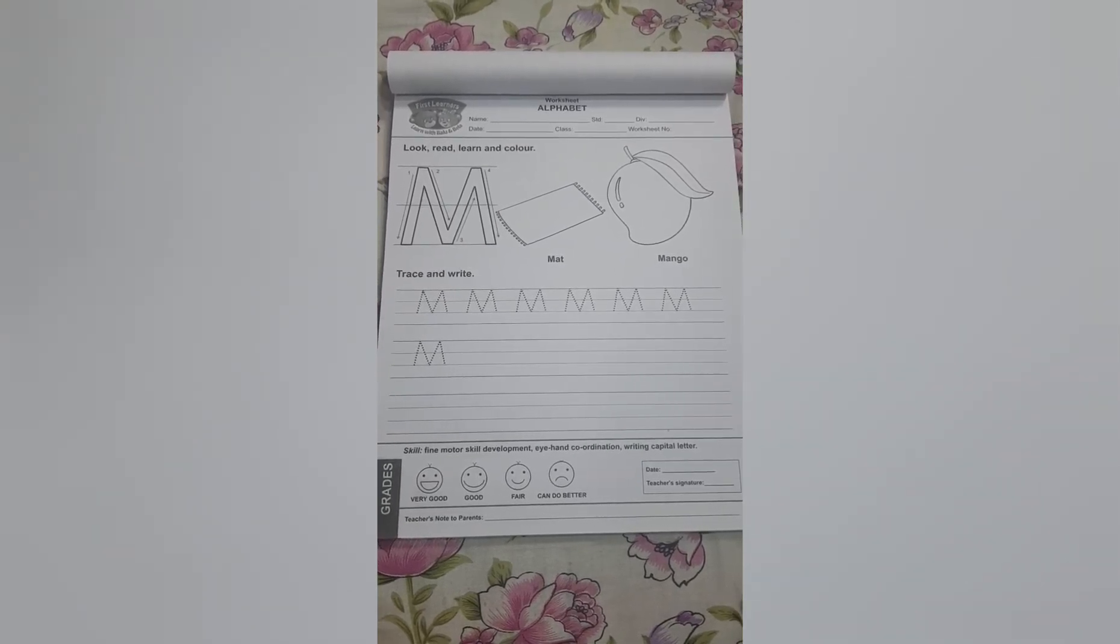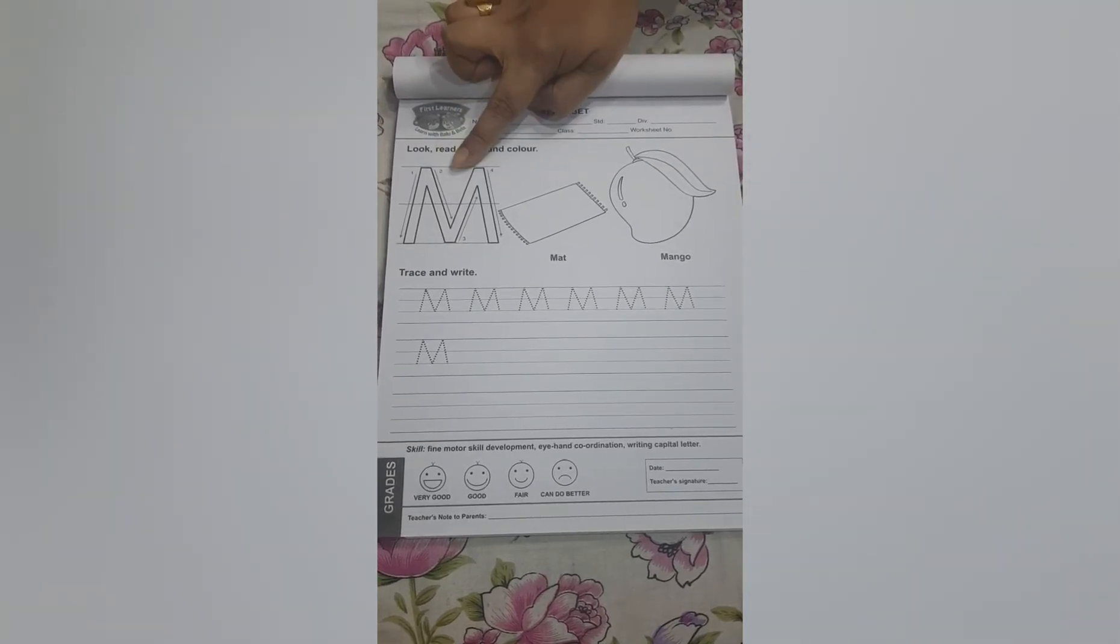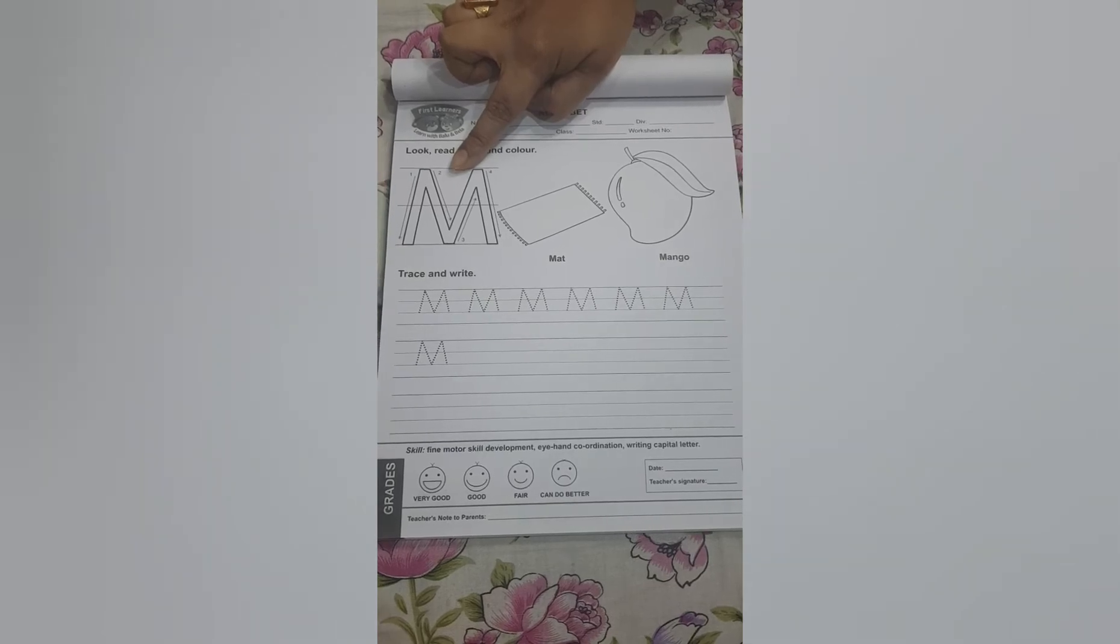We shall learn how to write alphabet M with the joining of the dotted marks. Okay, let's start children.